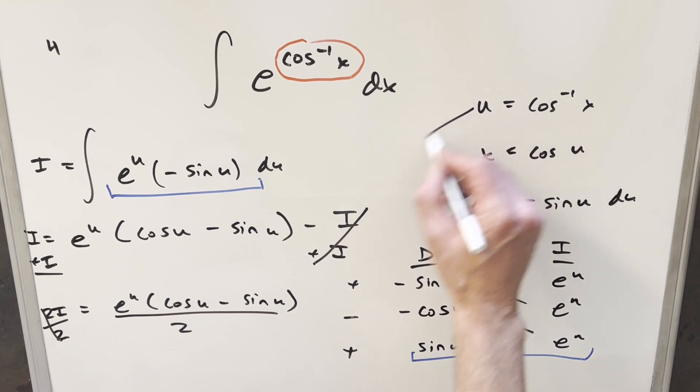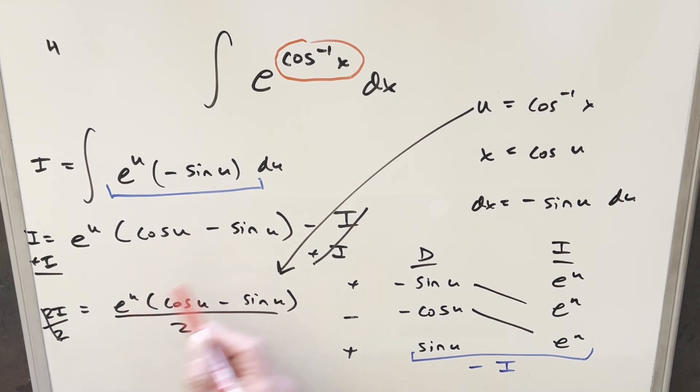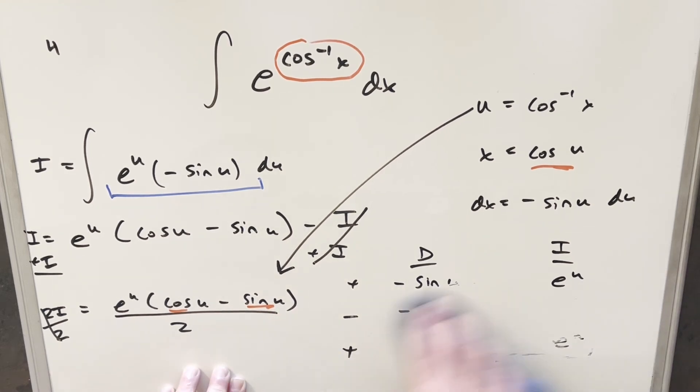And now to finish off, I'm just about ready to back substitute with the u value, but a couple things I want to notice. Now for when we do this, we have our u value, we already have cosine of u right here, but what I want is a value for sine of u. What I can do actually is make some space and draw the triangle and find that before we back substitute.